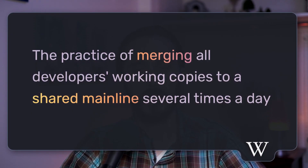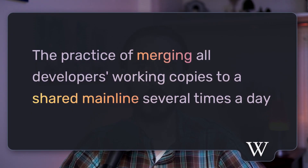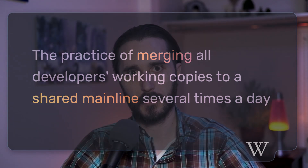Wikipedia defines CI as the practice of merging all developers' working copies to a shared mainline several times a day. In Git terms, this typically means that developers are branching off of a main branch to create their own feature or bug fix branch, and then merging that back in — and they need to be merging that back in really frequently. That's the important part.